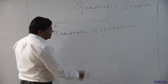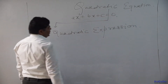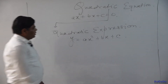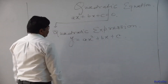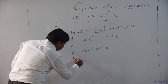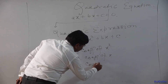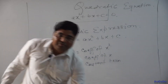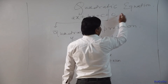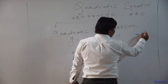So first we have to understand what is a quadratic expression and what is a quadratic equation. A quadratic equation is Ax² + Bx + C = 0, and a quadratic expression is Y = Ax² + Bx + C. This coefficient of x² plays a very important role in quadratic equations and expressions. This will be a quadratic equation under the condition when A is not equal to 0, and similarly a quadratic expression requires A not equal to 0.